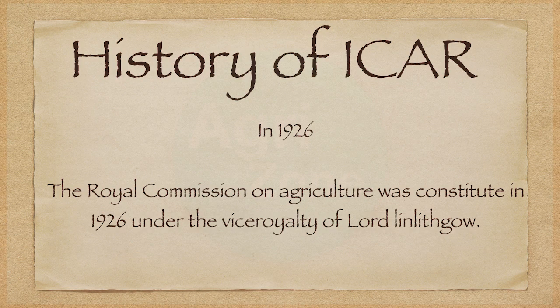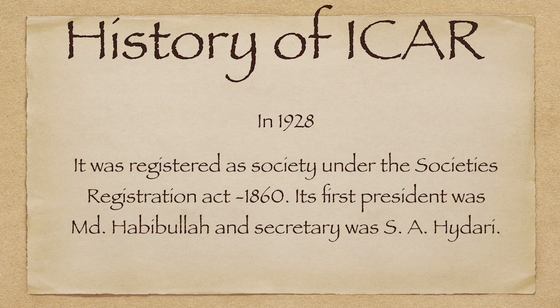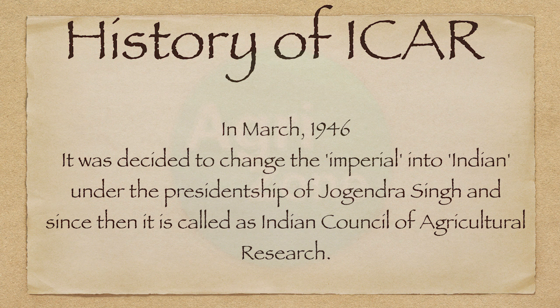In 1926, a Royal Commission on Agriculture was constituted under the viceroyalty of Lord Linlithgow in 1966. It was registered as a Society under the Society's Registration Act of 1860. Its first president was M.D. Fabi Bulla and the secretary was S.A. Haidari. In March 1946, it was decided to change 'Imperial' to 'Indian' under the presidency of Jogendra Singh, and since then it was called the Indian Council of Agricultural Research.